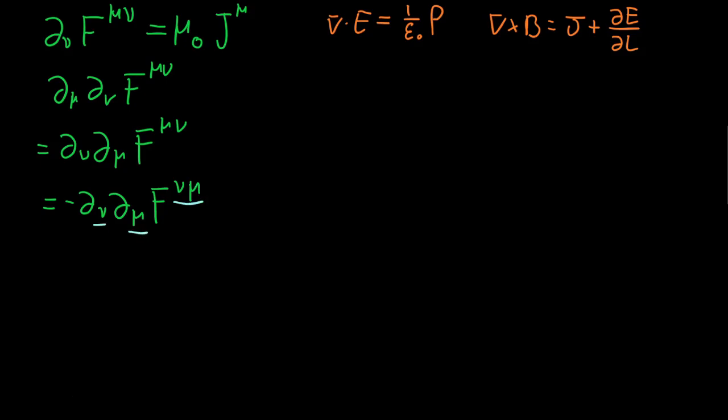And then because these guys down here are just dummy indices we may as well switch them around so that's going to be equal to negative partial mu partial nu of f mu nu, but hey that's what we've got up here and if something is equal to the negative of itself it must be equal to zero. That's really actually quite simple to do.